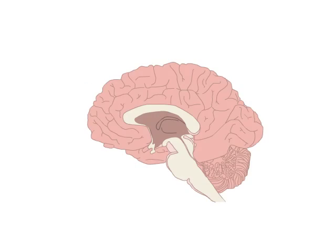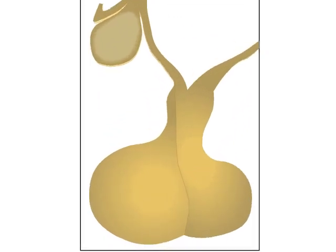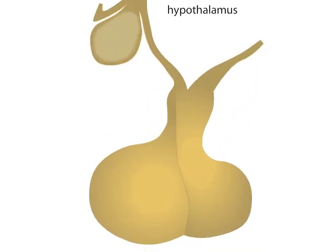The hormonal control center of the body can be found at the base of the brain in a tiny pea-sized structure called the pituitary gland and an overlying region called the hypothalamus. Because the pituitary controls many other endocrine glands, it's known as the master gland of the body. However, the hypothalamus wields even greater power because it controls the pituitary gland.